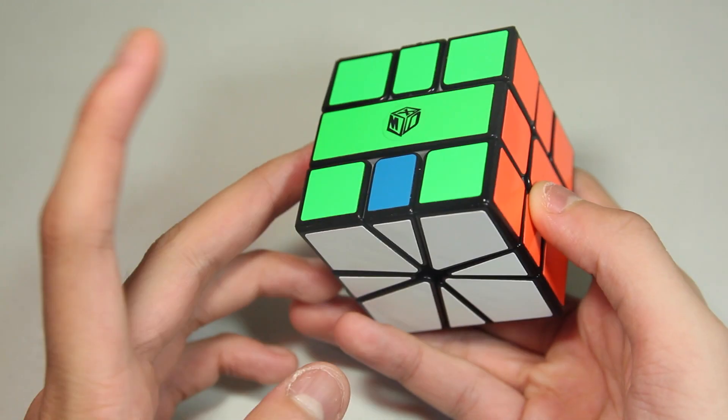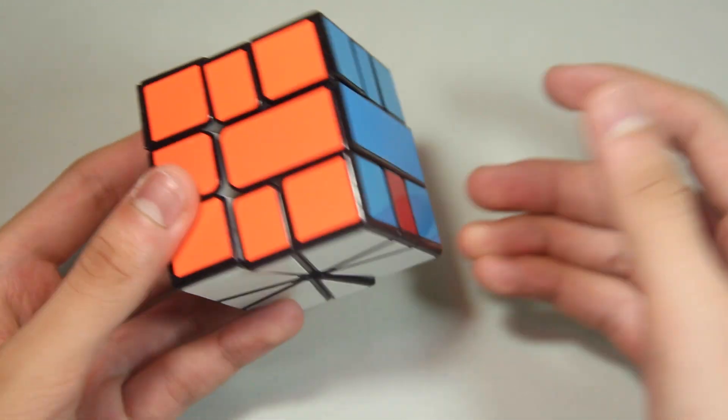Here's the next case, it's just the same, but the opposite color is on the left instead of the right, and this is the algorithm.